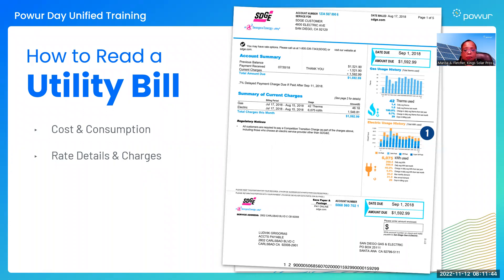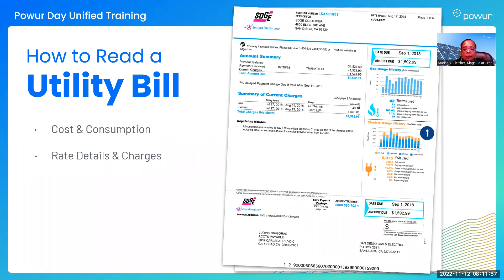Bills include charges for delivery, transmission, distribution, grid maintenance, wages for workers' salaries, service fees, energy cost adjustments, and many other line items that even most seasoned professionals won't understand.